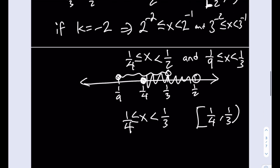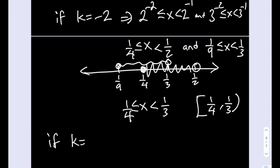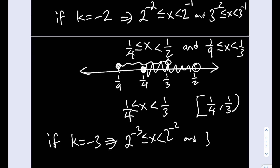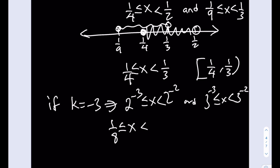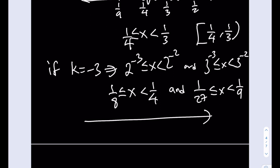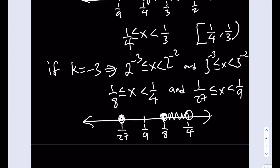Let's check k equals negative 3. We get x between 1/8 and 1/4 from base 2, and x between 1/27 and 1/9 from base 3. On the number line: 1/27, 1/9, 1/8, 1/4 in order. The interval [1/8, 1/4) and [1/27, 1/9) don't overlap since 1/9 is less than 1/8. There is no intersection, so the solution is the empty set.